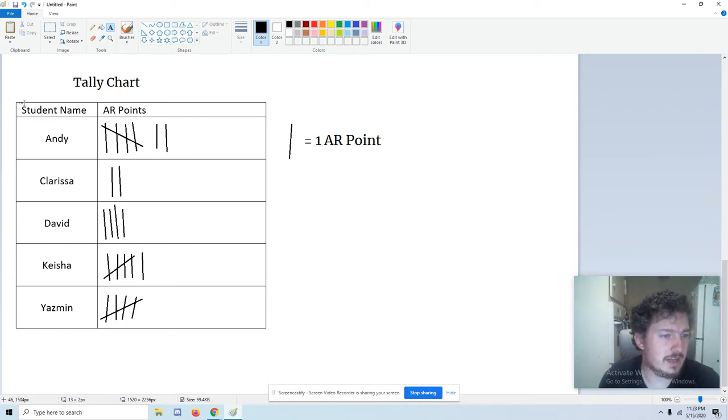So let's look at our chart. It says student name, and we have Andy, Clarissa, David, Keisha, and Yasmin, none of which are real people. I made them up. And on the other column, we have AR points. So it's a chart about how many AR points people have, just like our little meter back in our classroom, where you could put your star. So we're counting how many AR points people have, so they can reach their goal. I hope you're still trying to reach your AR goals, even when you're at home. And we can see, just to make sure, on the side we have a picture of a tally mark equals one AR point.